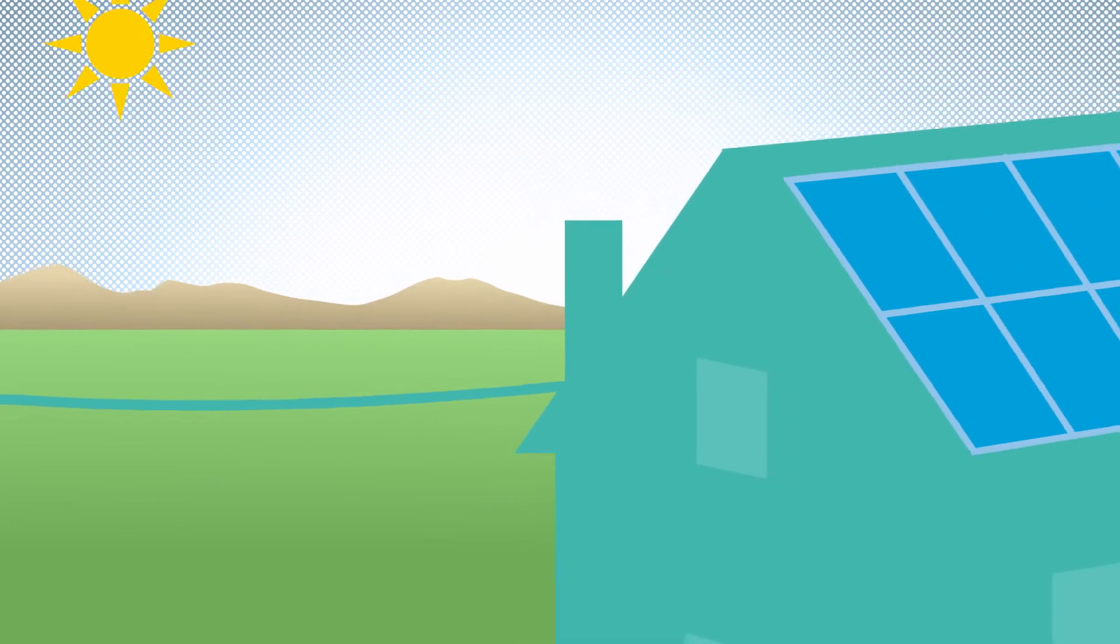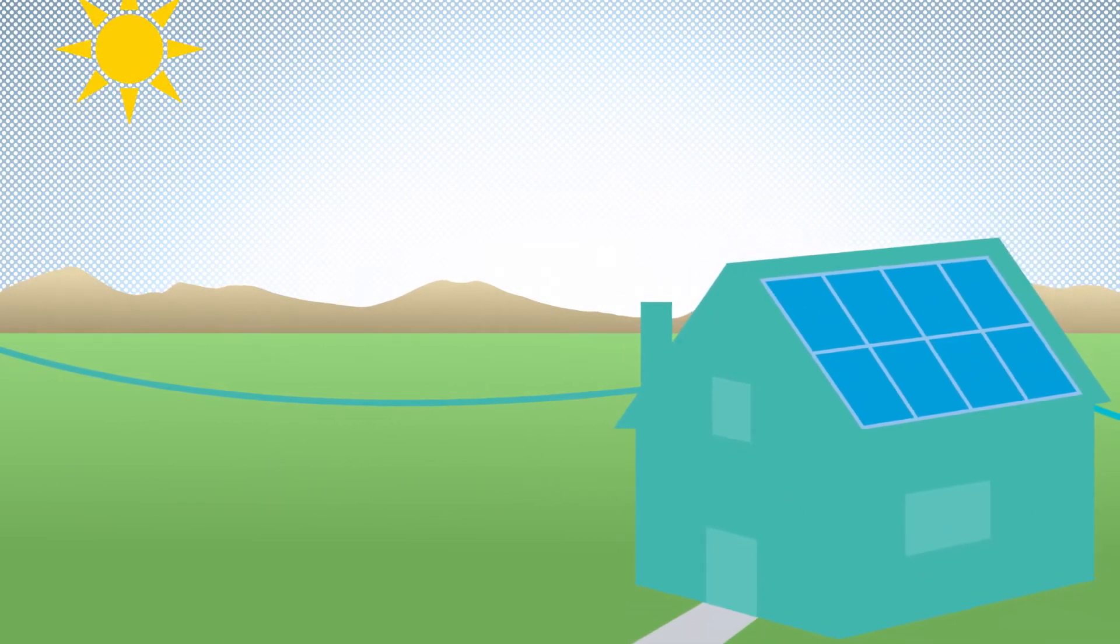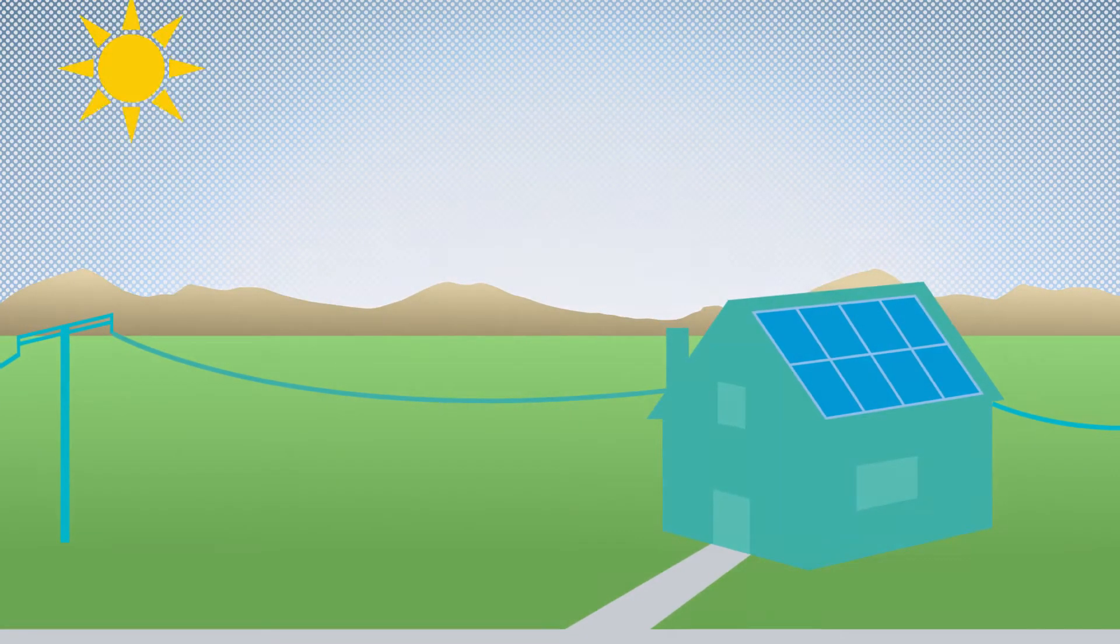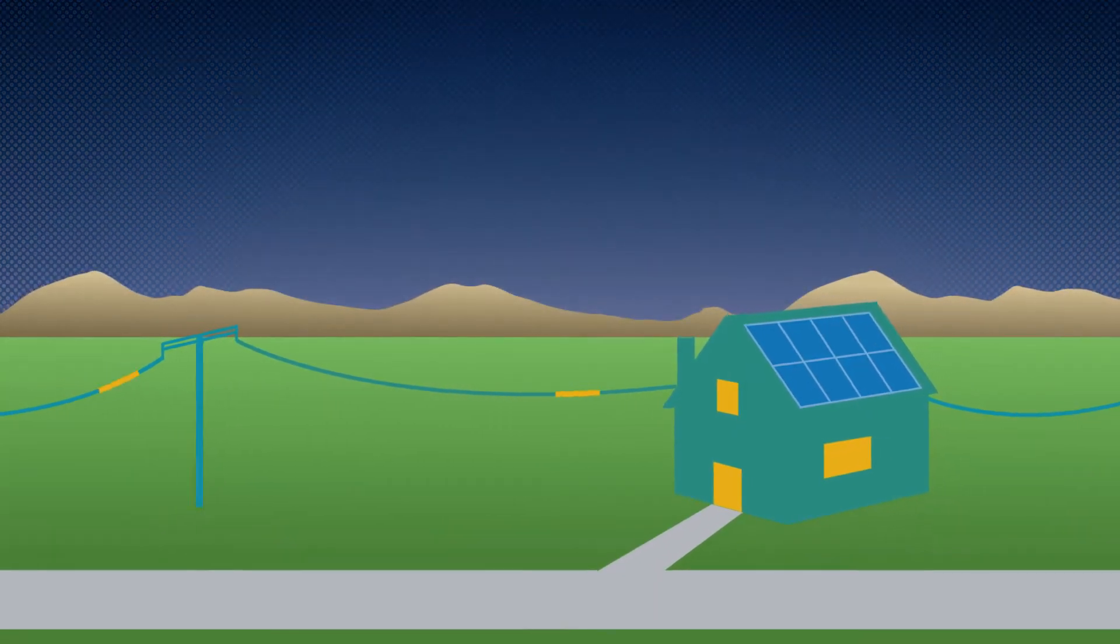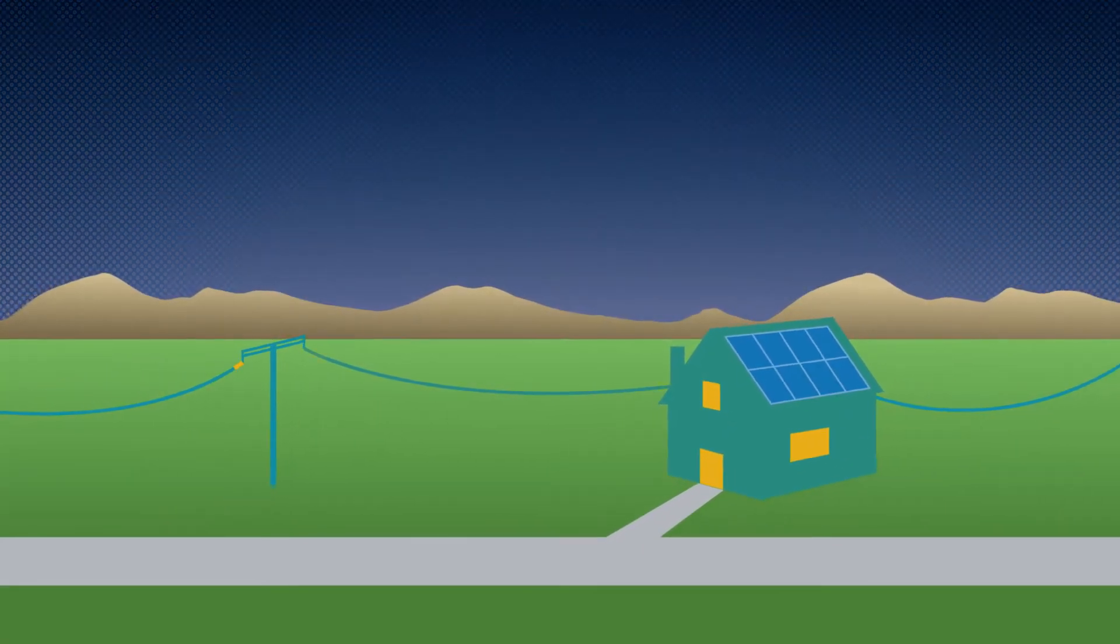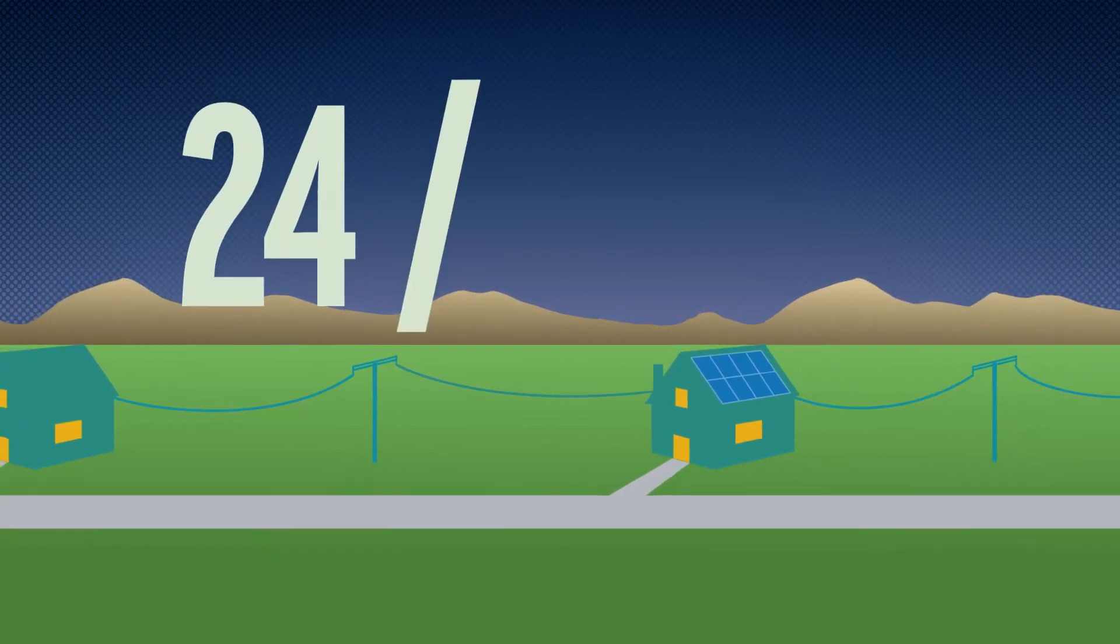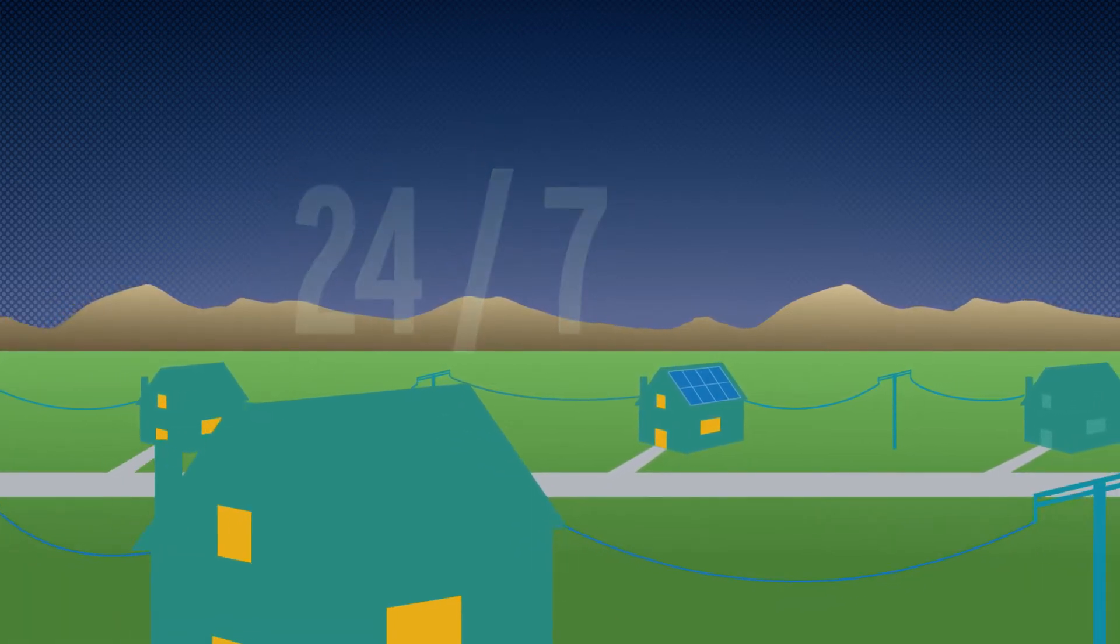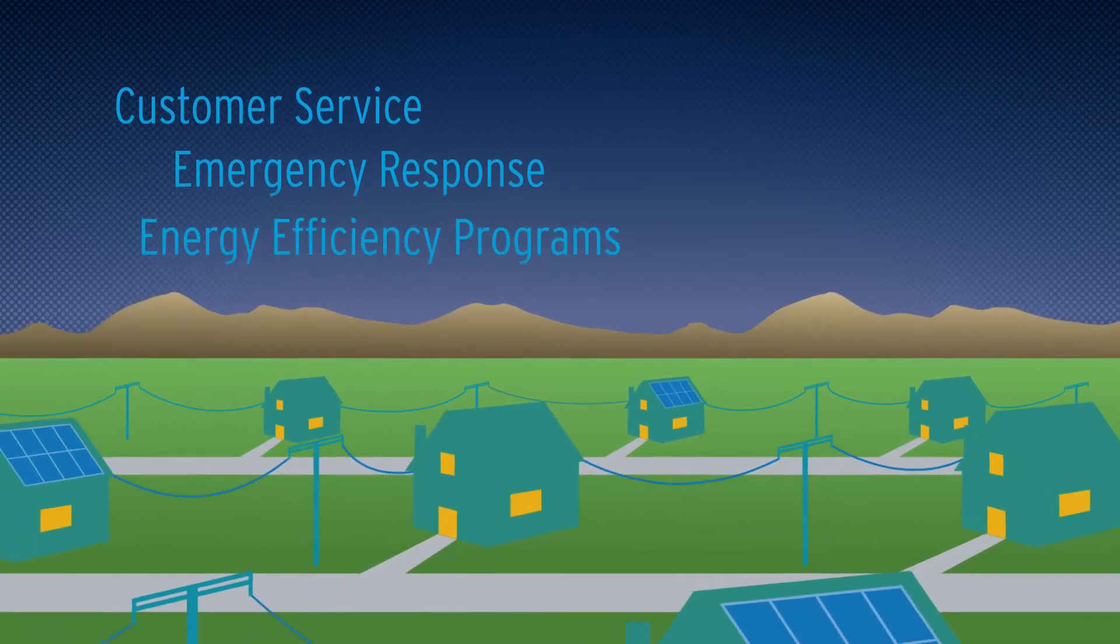Even if you have solar, you're still connected to the grid. Yes, solar systems actually have a two-way connection to the grid. When a solar customer's system makes more electricity than they need, they send that energy to the grid for credit. At night or when it's cloudy, energy is drawn from the grid. This two-way connection gives solar customers access to a reliable energy supply 24 hours a day, seven days a week. Along with energy, SDG&E also provides customer service, emergency response, programs to help people improve their homes and businesses' energy efficiency, and other important initiatives.